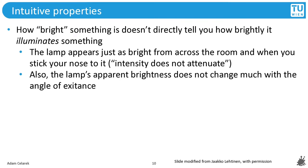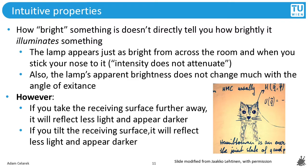How bright something is doesn't directly tell you how brightly it illuminates something. Usually I would show you this in the lecture room by bringing a large lamp and telling you to form a shield by your hands with a small hole. When you get closer to the lamp, the brightness that you see through this hole doesn't change. It also doesn't change when I tilt the lamp. However, when you take a surface and you bring it closer to the lamp, it does become brighter. It also becomes brighter when the angle is closer to 90 degrees. So if you tilt the surface, it will appear darker.